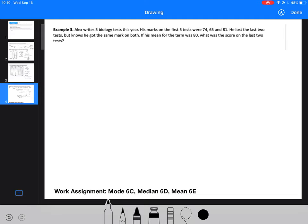We're going to do one more problem-solving example with Alex and his biology tests. He writes five biology tests this year, and his marks on the first three tests were 74, 65, and 81. He lost the last two tests, but he knows he got the same mark on both. And he knows that his mean for the term was 80. We're trying to find the score on the last two tests. So we're going to let x represent the mark on the last two tests.